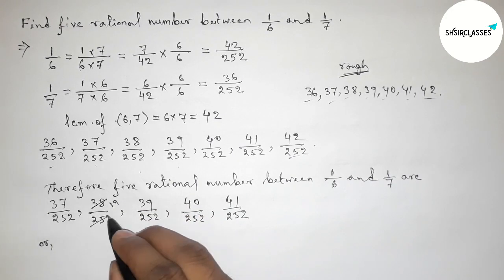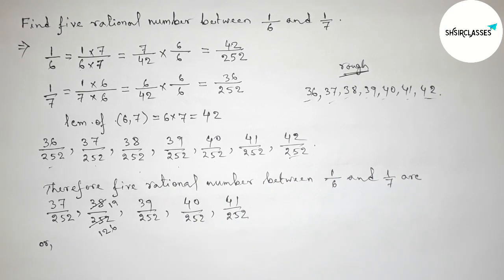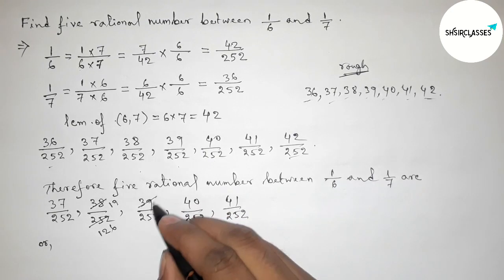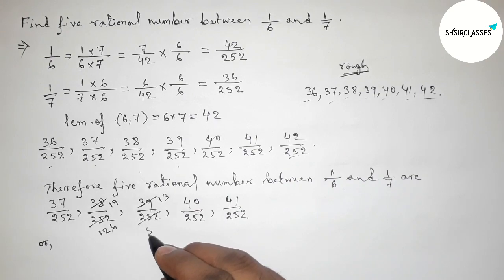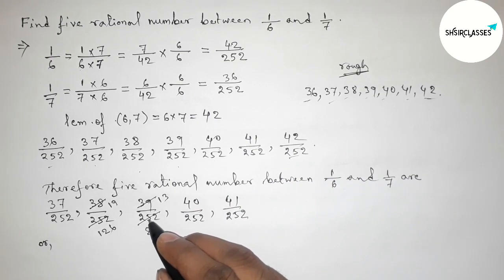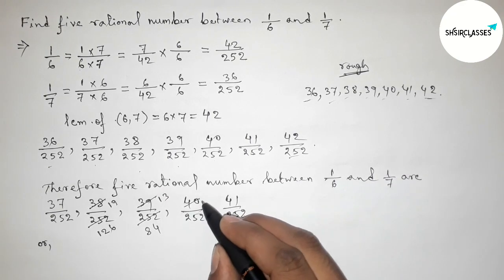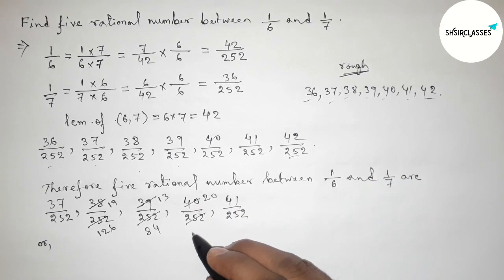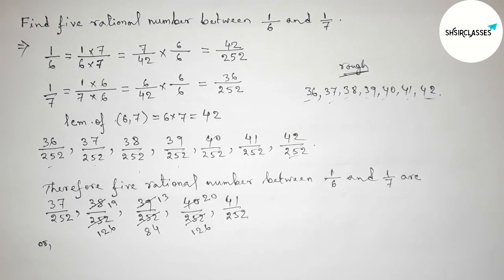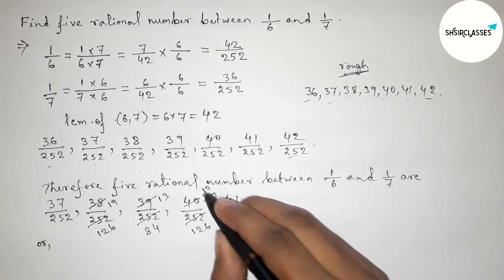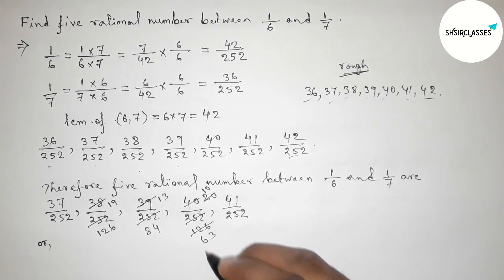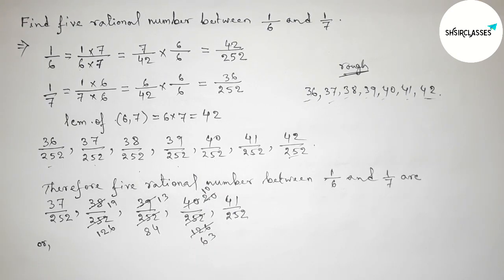Now, we can simplify these. If we divide 38 and 252 by 2, we get 19/126. Dividing 39 and 252 by 3 gives 13/84. Dividing 40 and 252 by 2 gives 20/126, and dividing again by 2 gives 10/63.